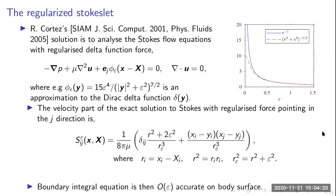That's the regularized stokeslet method — an exact solution to the smooth Stokes flow equations — from which you can derive a boundary integral equation that is order ε accurate on the body surface. Roughly speaking, without looking at discretization error or quadrature error, your solution to the resistance problem in Stokes flow or the swimming problem is going to be order ε accurate.